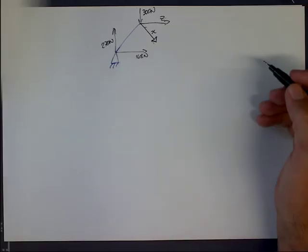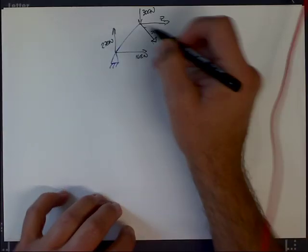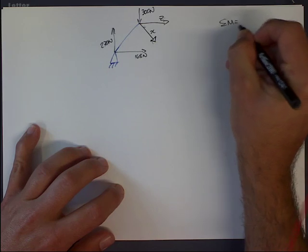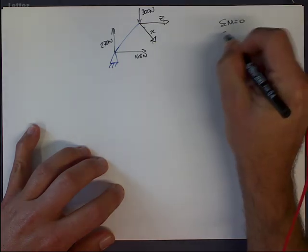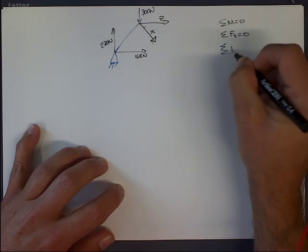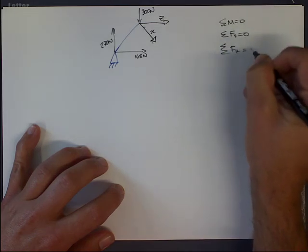There are three things we can say about any section or entire bridge in equilibrium. First, the sum of the moments equals zero. Second, the sum of the forces vertical equals zero. Third, the sum of the forces horizontal equals zero.